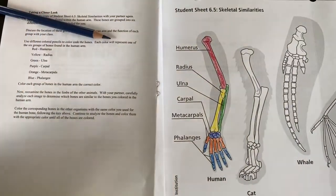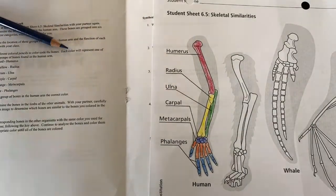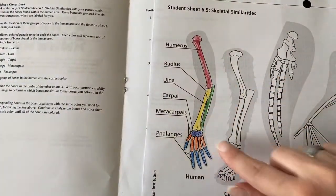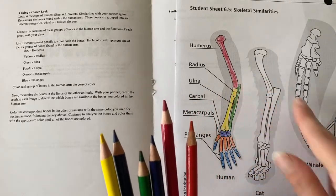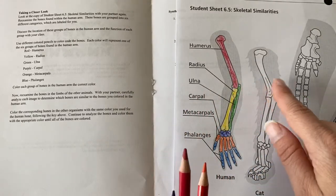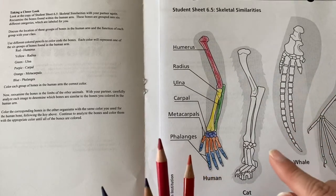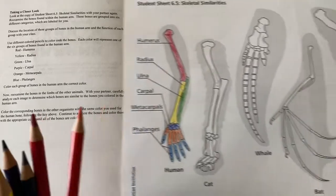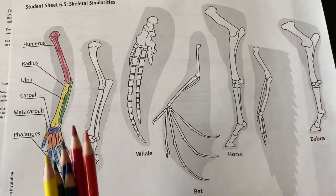Now, re-examine the bones in the limbs of the other animals. Think about the images to determine which bones are similar to the human bones, and then color the corresponding bones with the same color. So, in the cat, which is the humerus in the cat? Which is the humerus in the whale? Which are the phalanges in the cat? Continue to analyze and color the bones until the whole sheet is color-coded with the same coloring scheme.